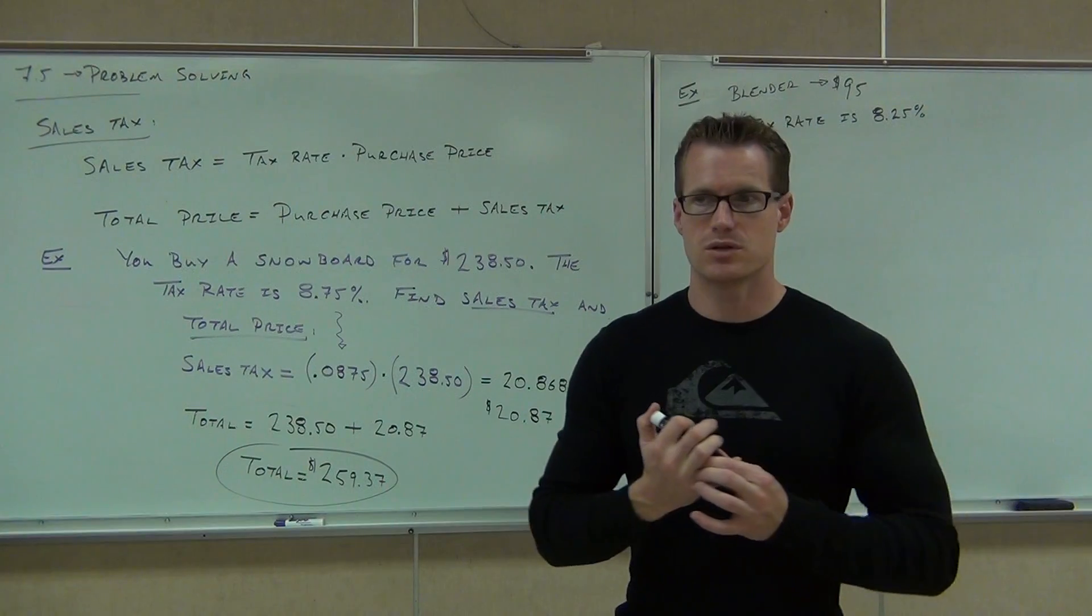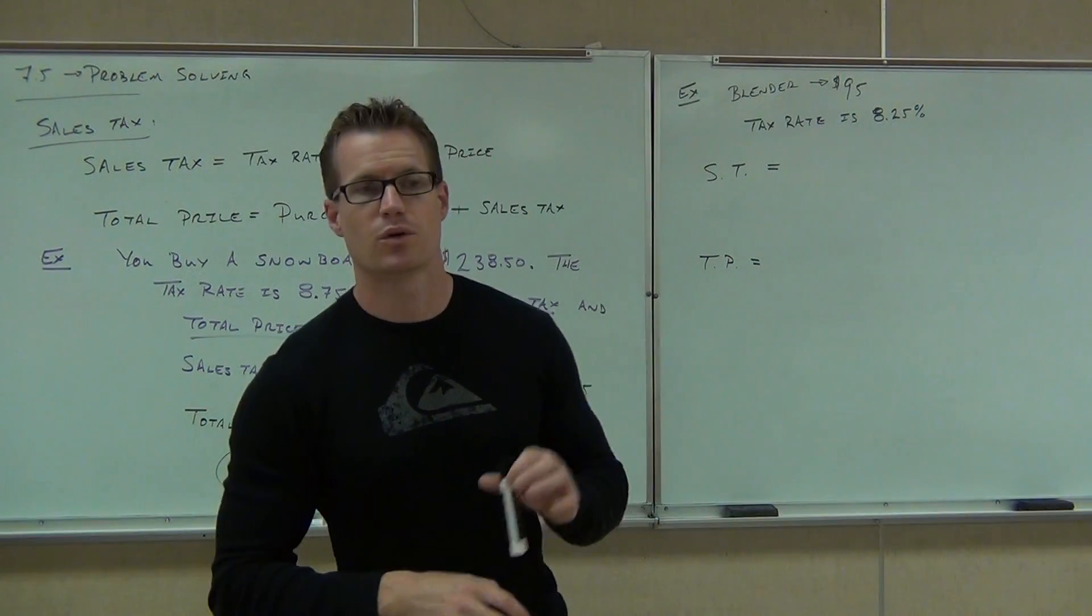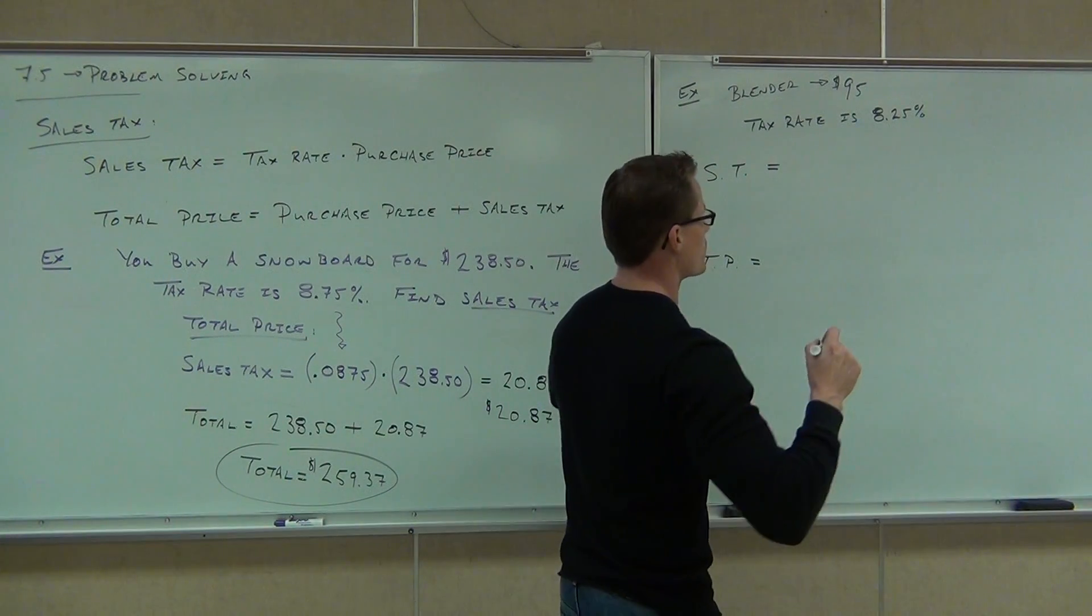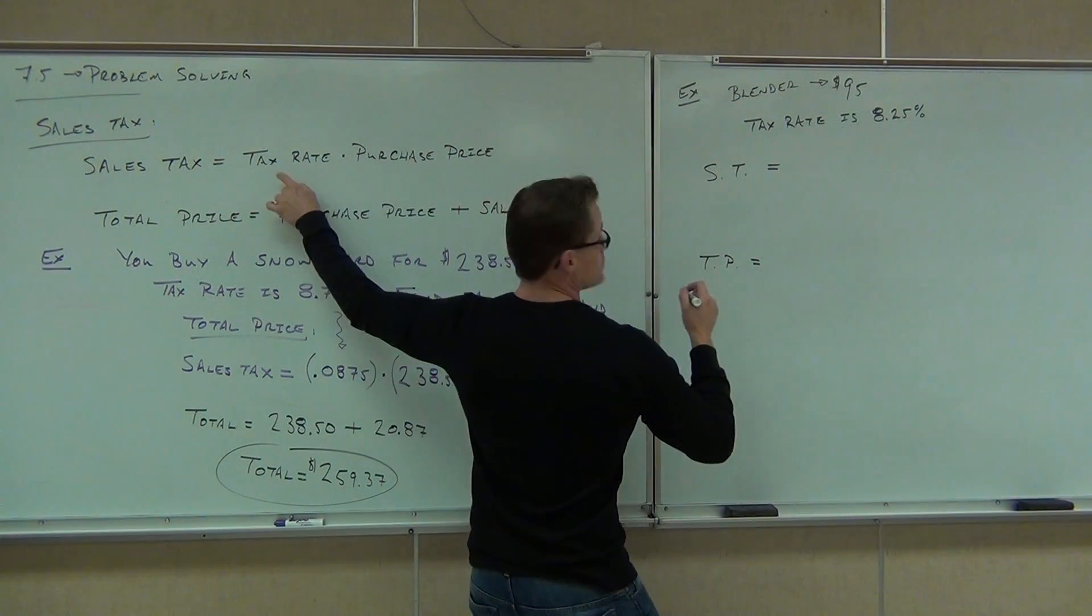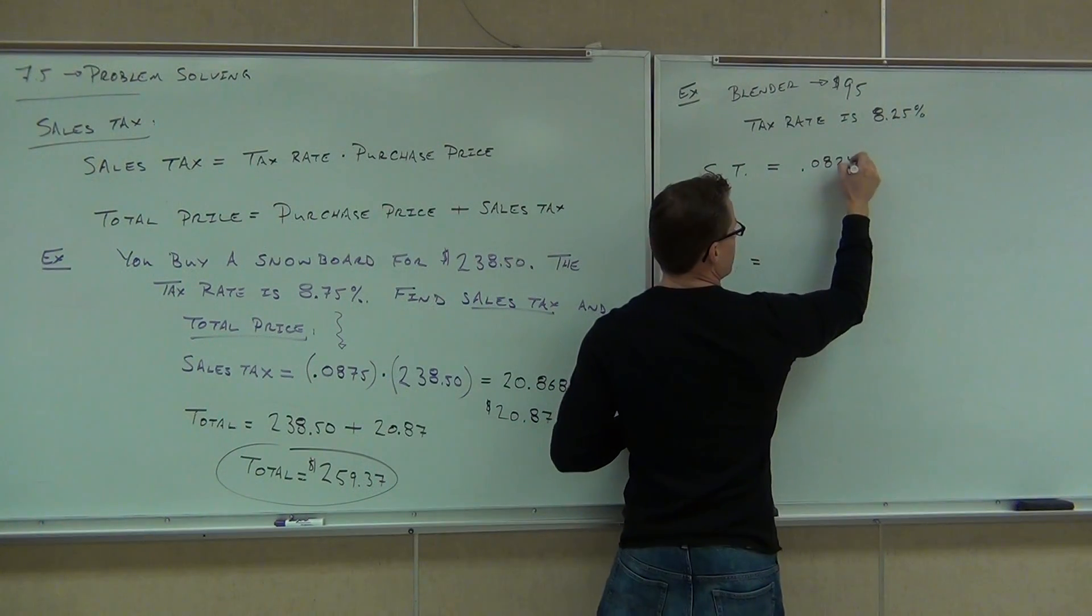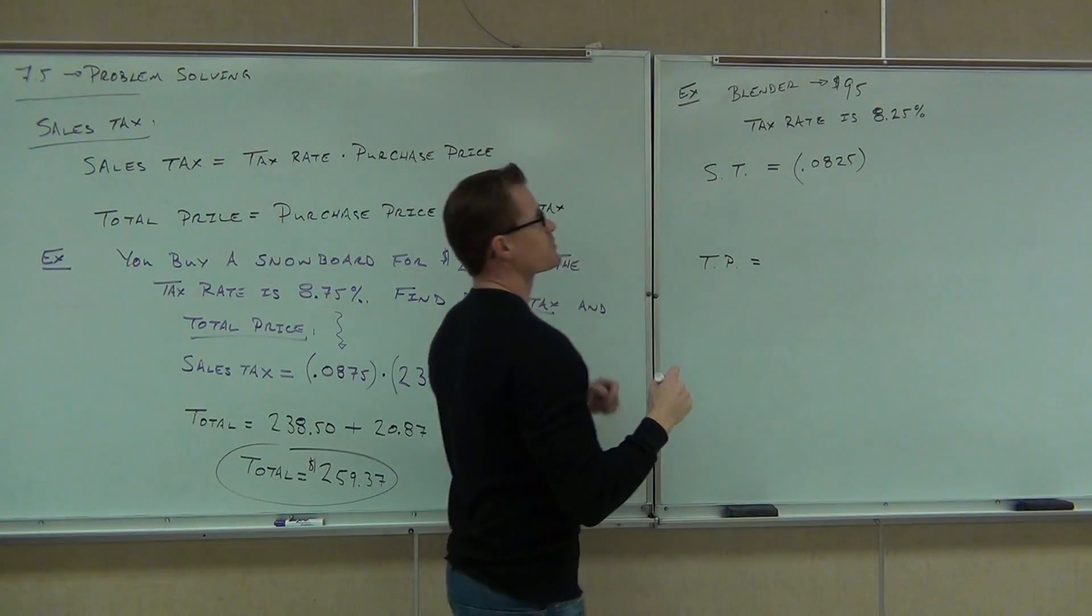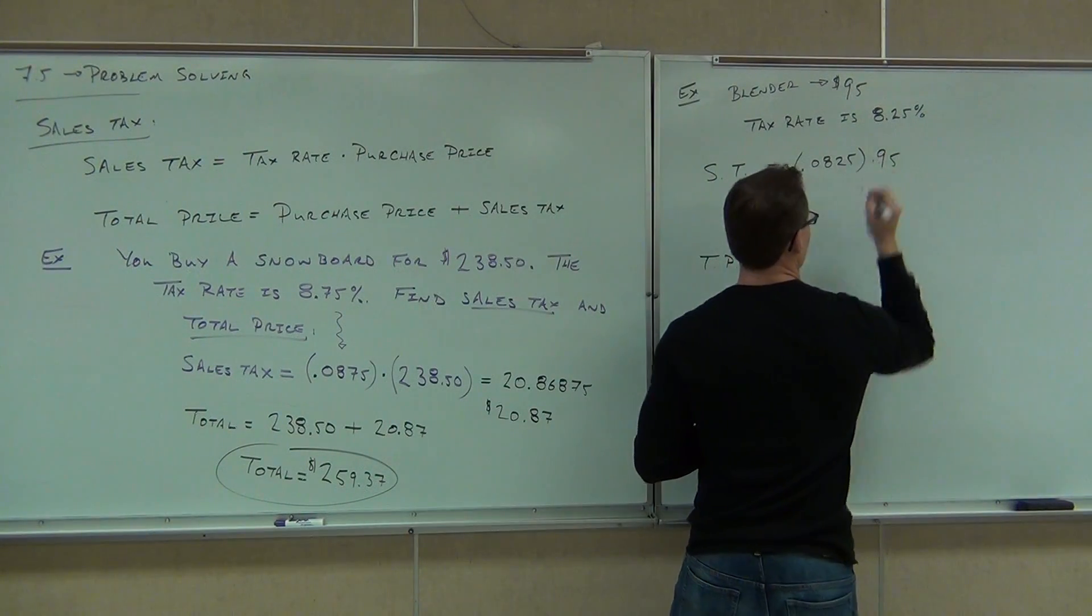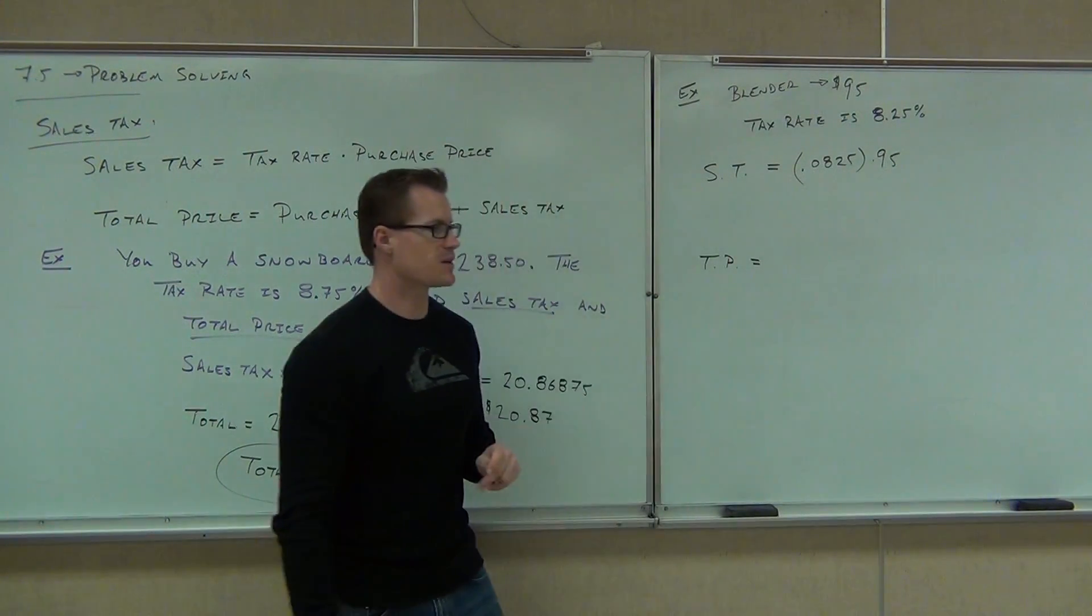You have to change the 8.25% into a decimal in order to use it on your calculator. So if you're trying to find the sales tax, you need to know the tax rate, 0.0825, times the purchase price. In this case, it's $95. So 0.0825 times 95.